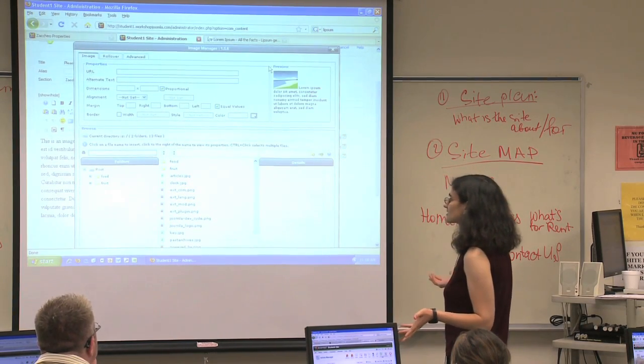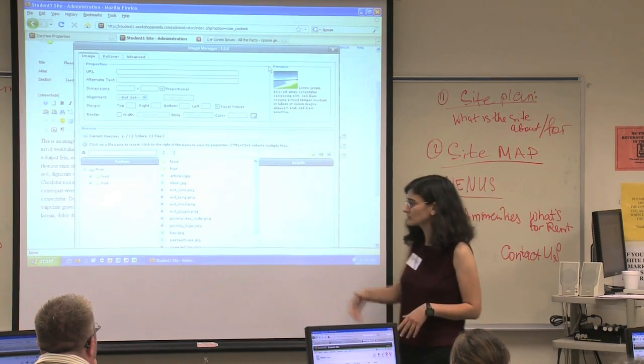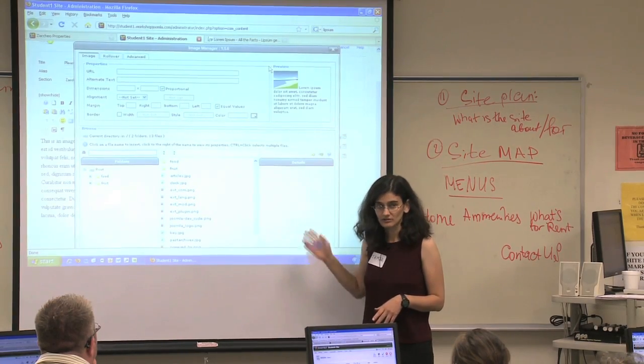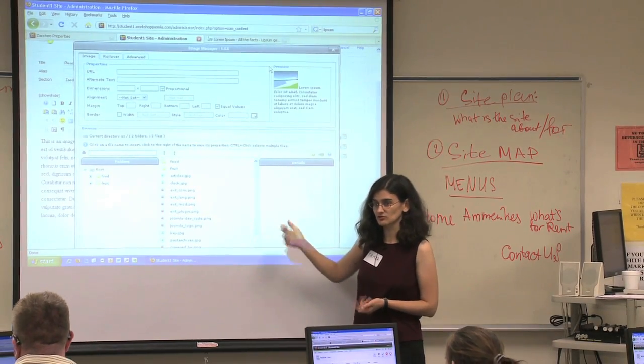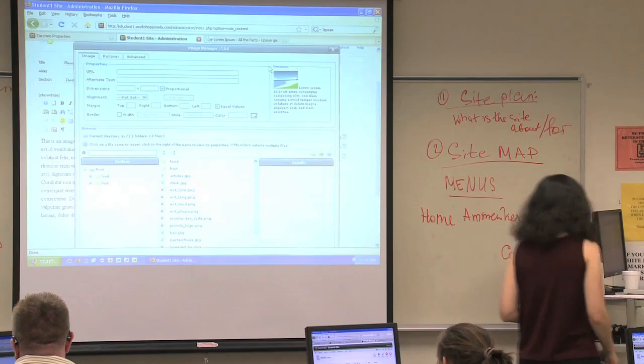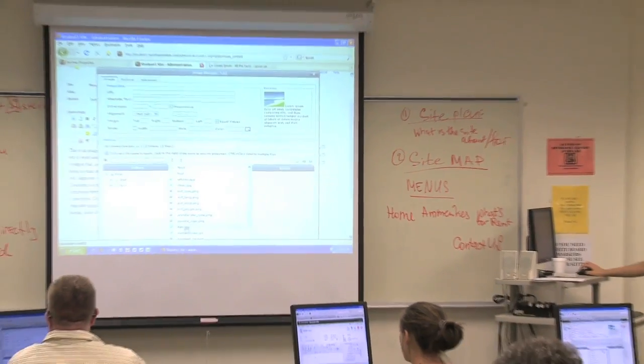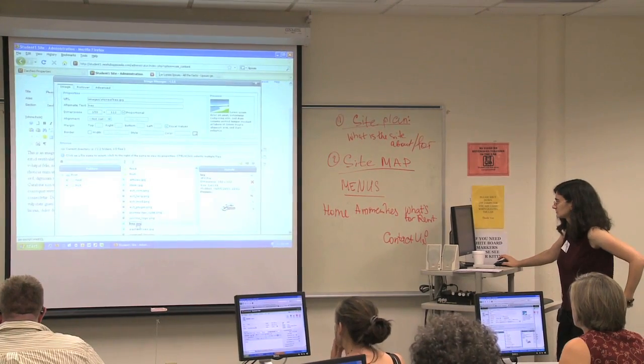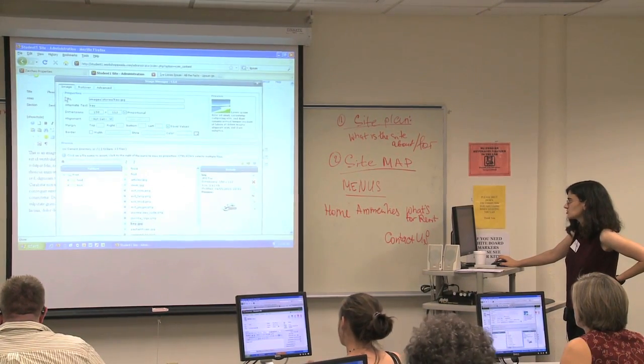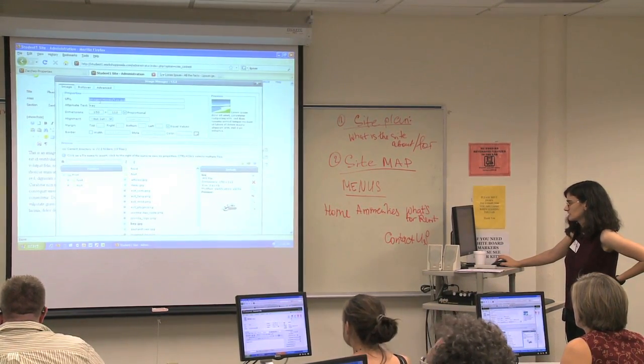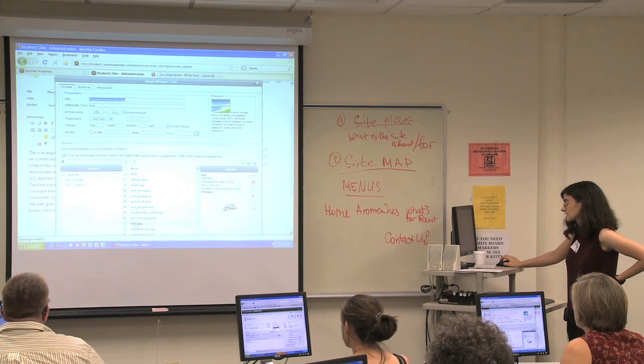So this gives you a lot of options. And now there are some images that come with Joomla that are already here, which you're not usually going to use. But in this case, we'll try one just for an example. So Joomla has a key. If you click on key, you will see an image of a key. Up on here, you will see a URL. There must be a URL in there. If you don't see a URL, you need to click on key again.